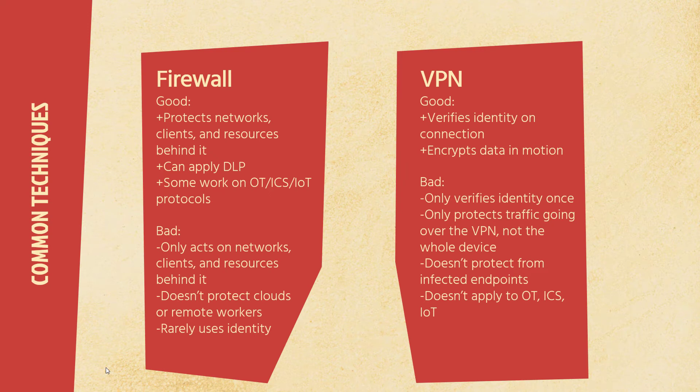One almost everybody knows about: your firewall and your VPN. Firewalls are good because they protect everything behind them — some can apply DLP. There are firewalls from certain manufacturers, Fortinet being one of them, that can work on OT, ICS, and IoT non-IP protocols, scanning those as part of their application filtering. But the obvious downside is that though it protects networks, clients, and resources behind it, it only acts on those — it doesn't protect clouds or remote workers any more than they are behind the firewall. And it rarely uses any kind of identity to log on.